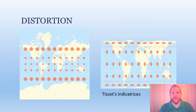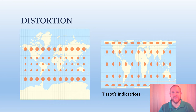No matter how good a projection is, it will always have distortion in the size, shape, or both. The Tissot indicatrices are a way of visually representing the distortion of a map. They are named after the French mathematician who invented them.